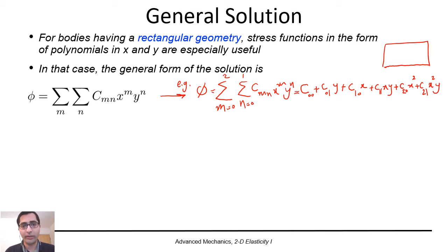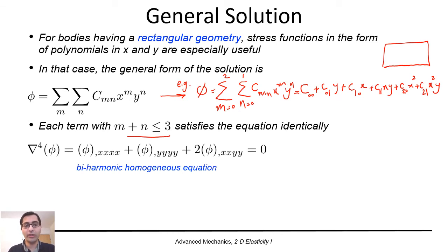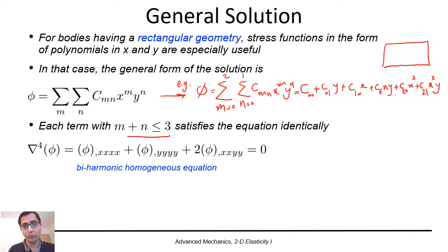Pay attention that for each term with m plus n less than or equal to 3, it satisfies the biharmonic equation identically. This is because the biharmonic homogeneous equation delta4(phi) = 0 contains fourth-order derivatives with respect to x and y. So if m plus n is less than or equal to 3, the polynomial satisfies the equation identically.